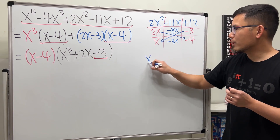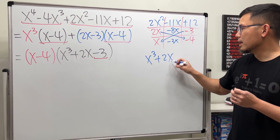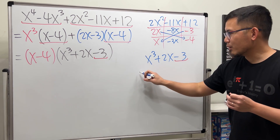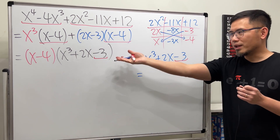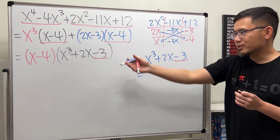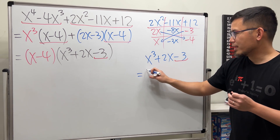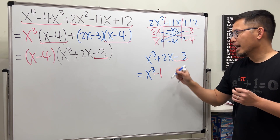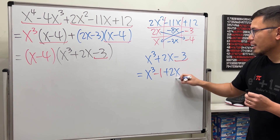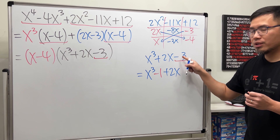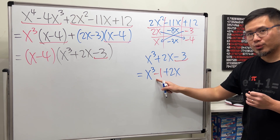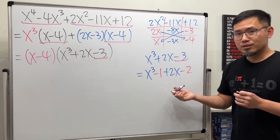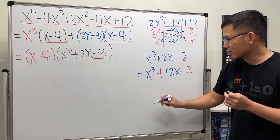So have a look on the side: x to the third power plus 2x minus 3. I'm going to break down the minus 3. Earlier we said 1 is a root, so I'm just going to write this as x to the third power minus 1, then plus 2x, and then I need to get minus 3 — this is minus 1 already, so I need minus 2. Why? Because, again, factor by grouping.